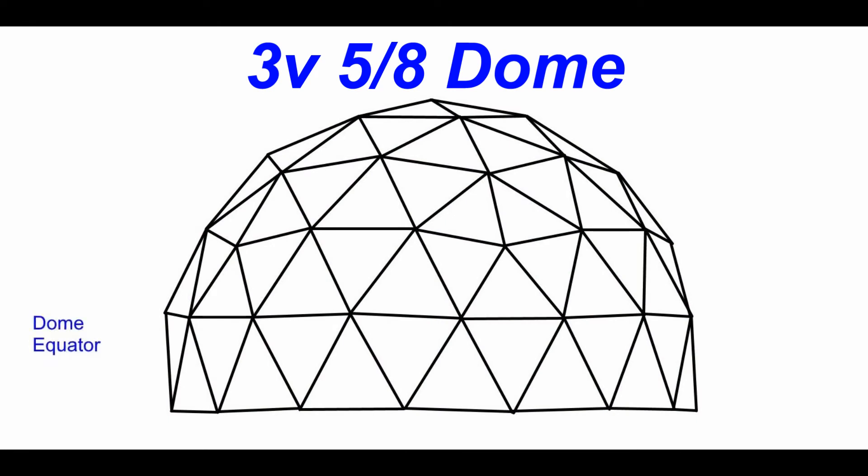For the 3 frequency dome and the other odd number domes, the true equator of the dome passes through the middle of a vertical section of struts. Since the dome cannot sit on the true dome equator without cutting all these struts in half, the 3 frequency dome has to either be a 3 eighths dome or a 5 eighths dome.